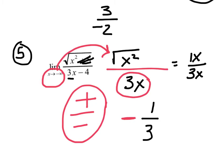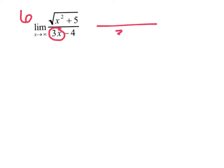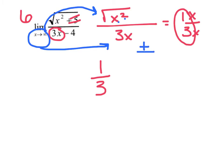If you have to go back and pause to get that correctly, do that. You're plugging in to verify your signs — just because you got positive 1 third doesn't mean your answer is actually positive. Be careful plugging in negative infinity. The very similar next one: largest term on bottom is 3x, largest on top is square root of x squared, which simplifies to x over 3x. Plugging in positive infinity: squaring gives positive, 3 times positive is positive — so the answer is positive 1 third.